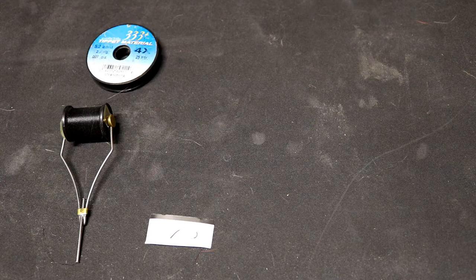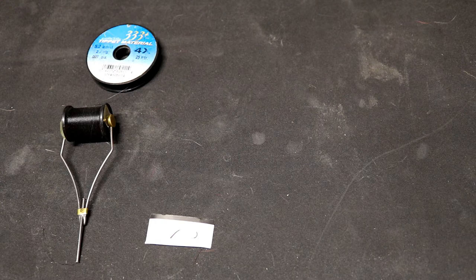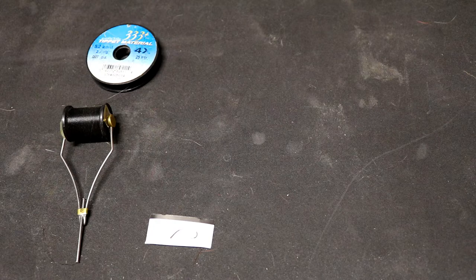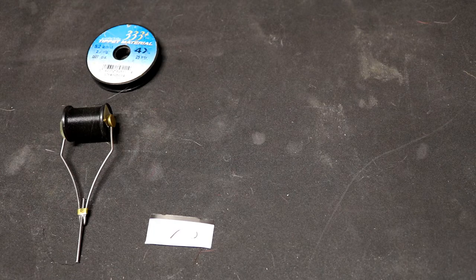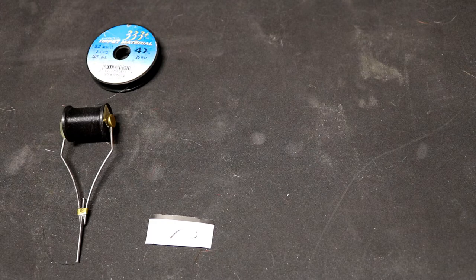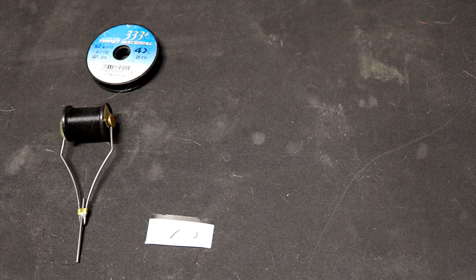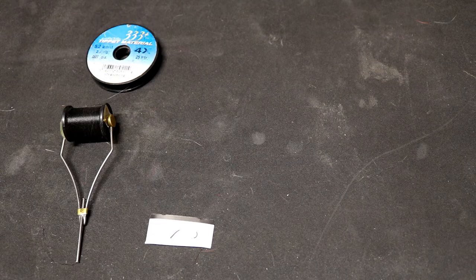You're going to need some sort of monofilament tippet material. I tie these in 4x, but if you have something a little larger or a little smaller that'll be just fine. This isn't something that's going to be under any kind of strain; we're going to be using this as a ribbing material. So old material or material that's not of the best quality will work absolutely fine for this application.